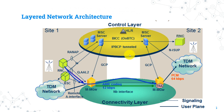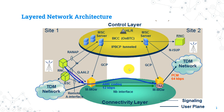In the CS core there exist nodes which handle the signaling plane, and other nodes which handle the user plane. Mainly the connectivity layer nodes carry the user plane traffic, while control and application layer nodes carry signaling plane data.